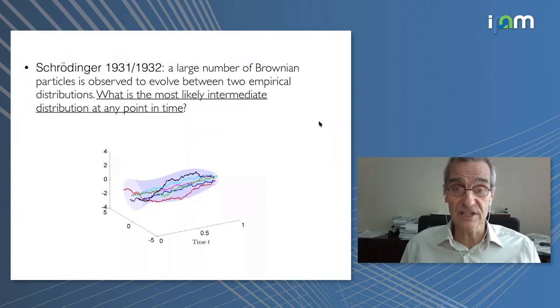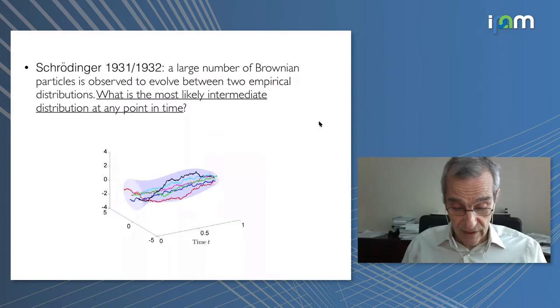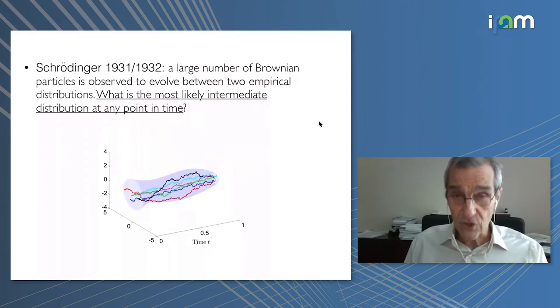Very briefly what is the Gedanken experiment: he thought of a large number of Brownian particles that are supposed to diffuse all over the place starting from some initial distribution, but then they are constrained to abide by an observed empirical distribution at the end of the interval, and he asked the question what is the most likely intermediate distribution at any point in time?